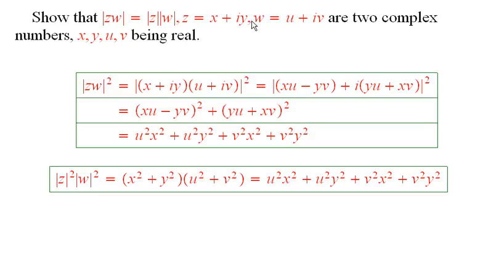So suppose z equals x plus iy, w equals u plus iv, where x, y, u, and v are, of course, real numbers.